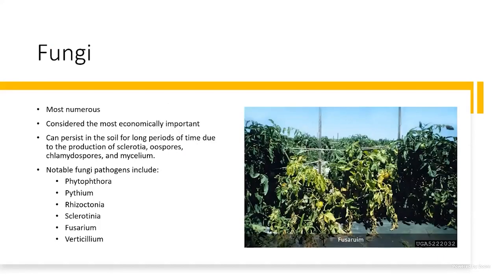The different pathogen groups are fungi, bacteria, viruses, and nematodes. Fungi are by far the most numerous and the most economically important group, and they are the winners as far as persisting in the soil for the longest amount of time. Notable fungal pathogens include Phytophthora, Pythium, Rhizoctonia, Sclerotinia, Fusarium, and Verticillium — almost all of these are very important on crops such as tomatoes and peppers.